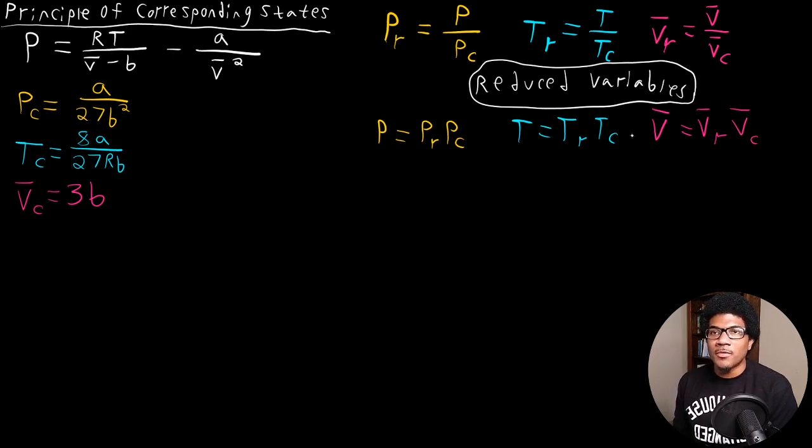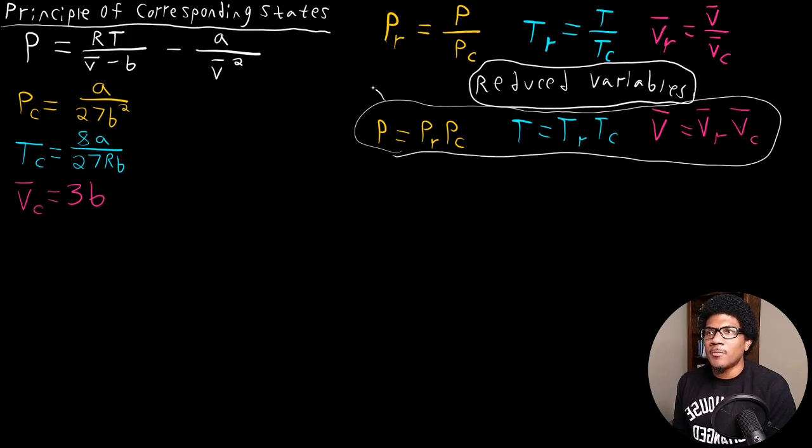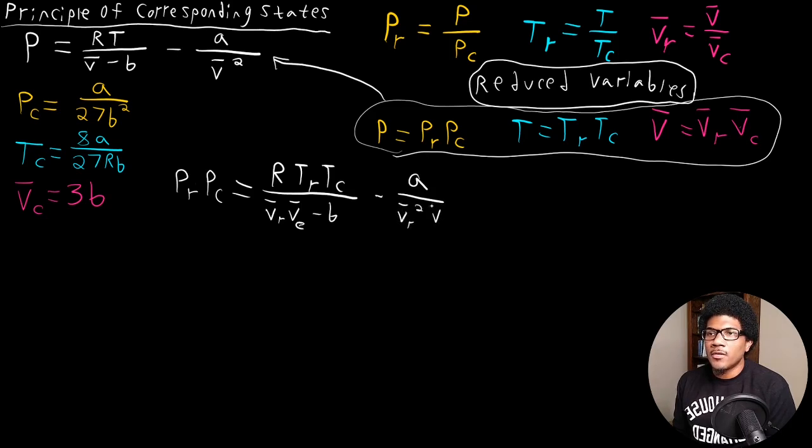We've defined the pressure, temperature, and volume in terms of the reduced and critical components. So what I want to do is actually take all three of these and plug them into the original Van der Waals equation. And let's see what happens when we do that. We can re-express the Van der Waals equation in the following way. We can have PR, PC on the left-hand side. All I've done is just substitute this guy in for P. So instead of P, we have PR times PC. And that's going to be equal to R TRTC over VRVC minus B minus A over VR squared VC squared.